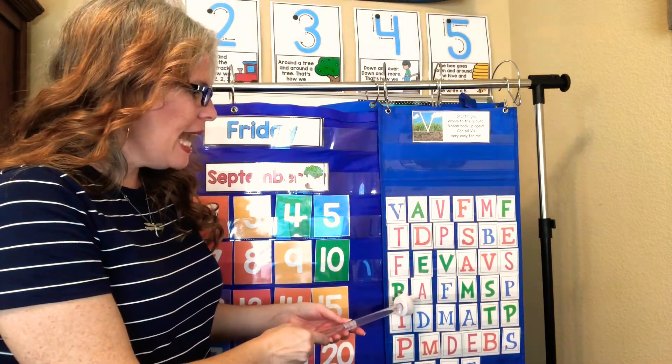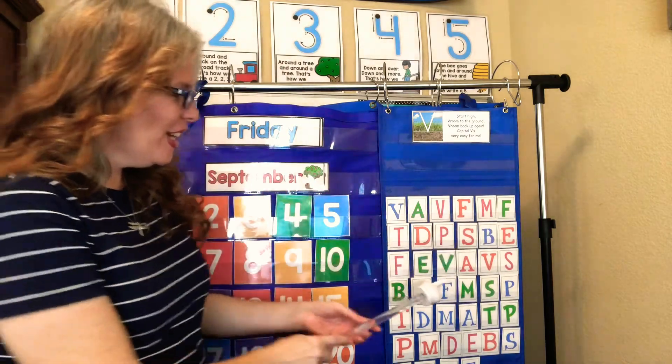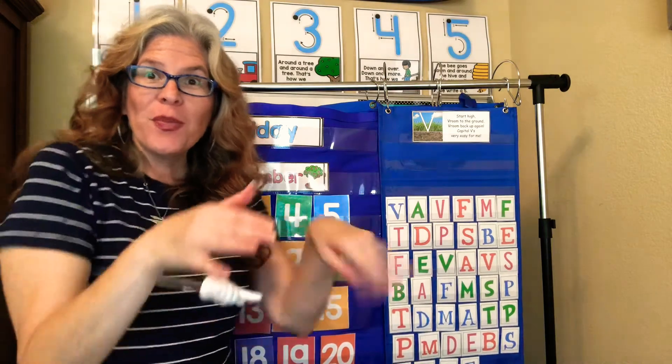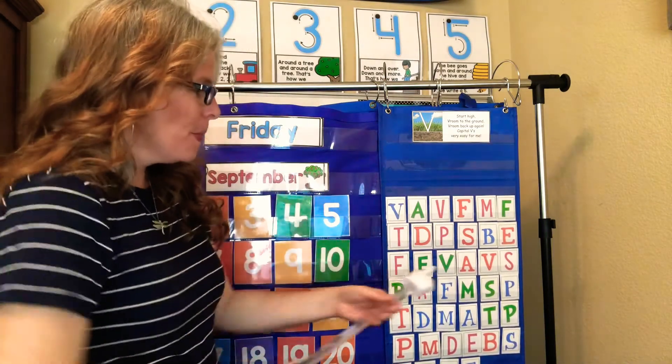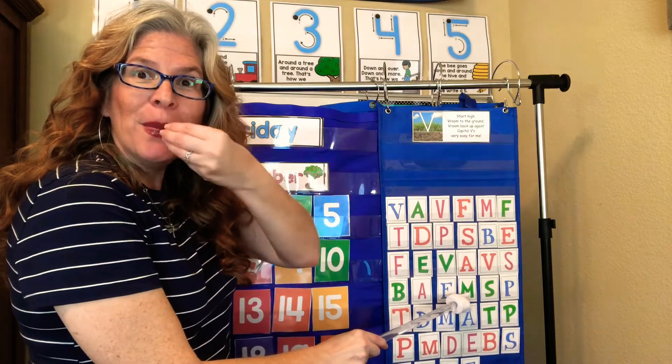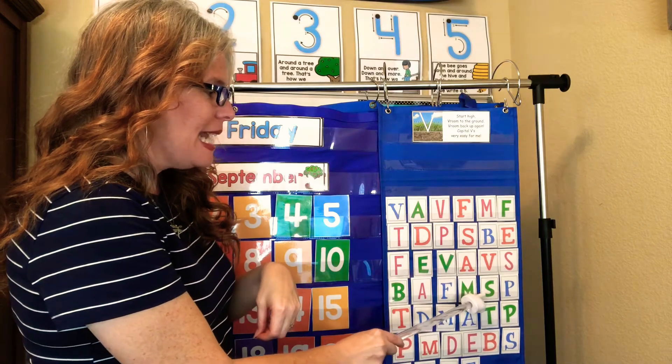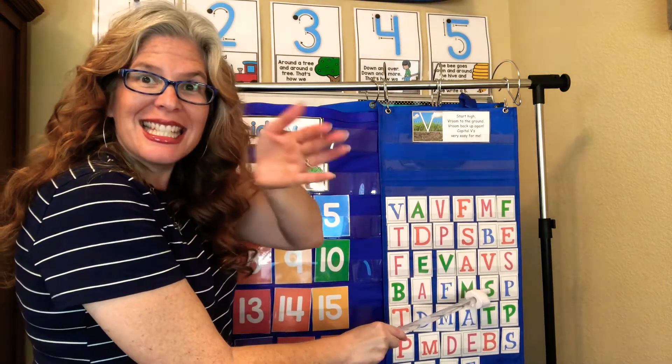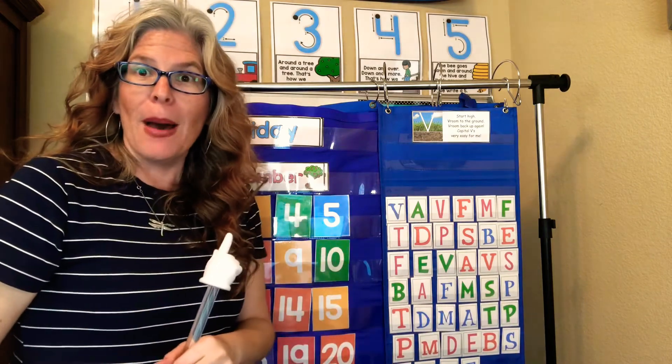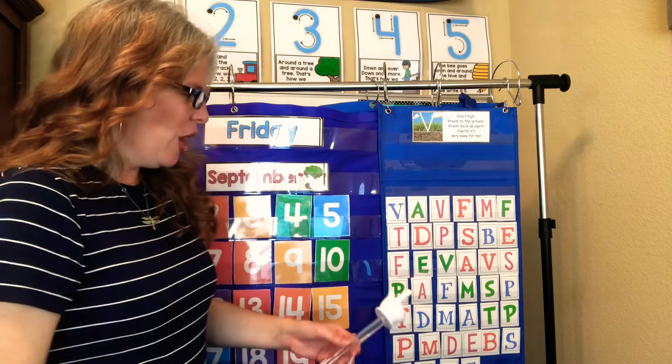What does Allie the Alligator say? Ah. Ah. Good. What does Francie Fish say? F. F. Good. What does Missy Mouse say? Mmm. Mmm. Good. Grab your cheese. What does Sammy the Snake say? S. S. Good. And what does P say? P. Penny the Penguin. P. P. Good.